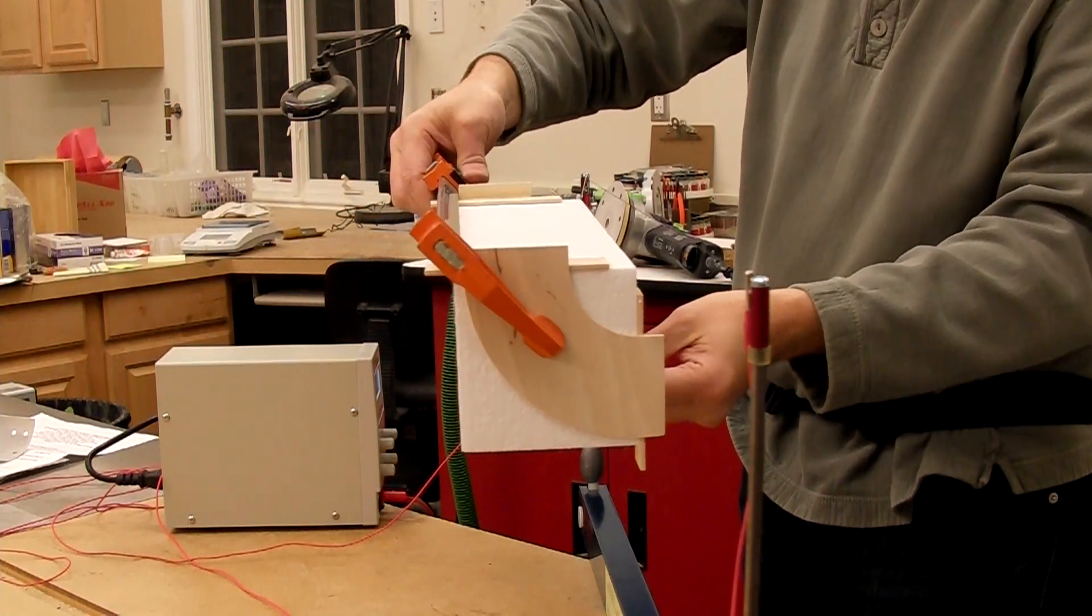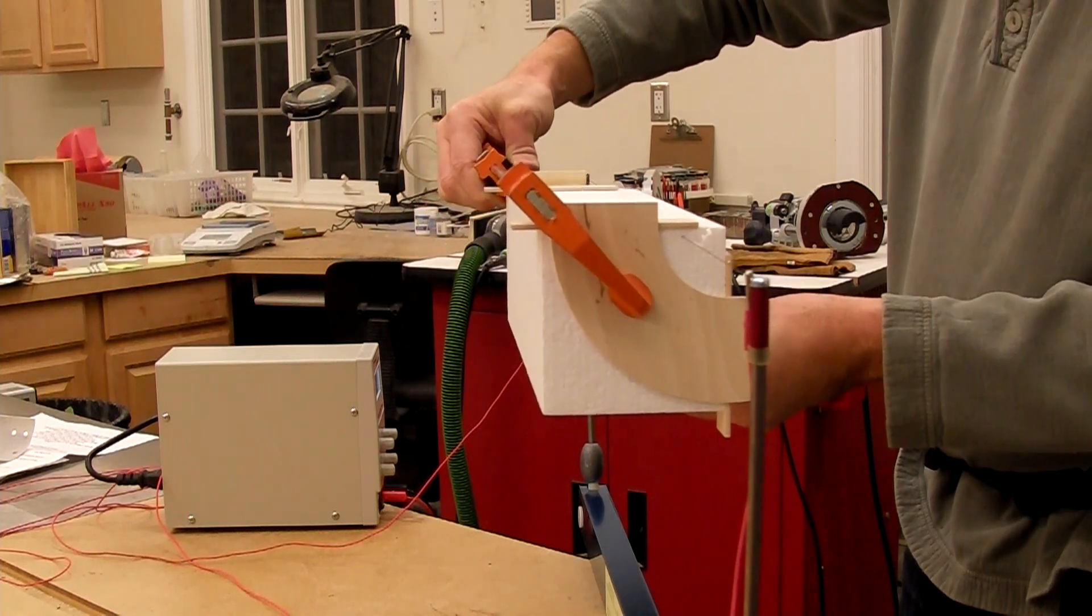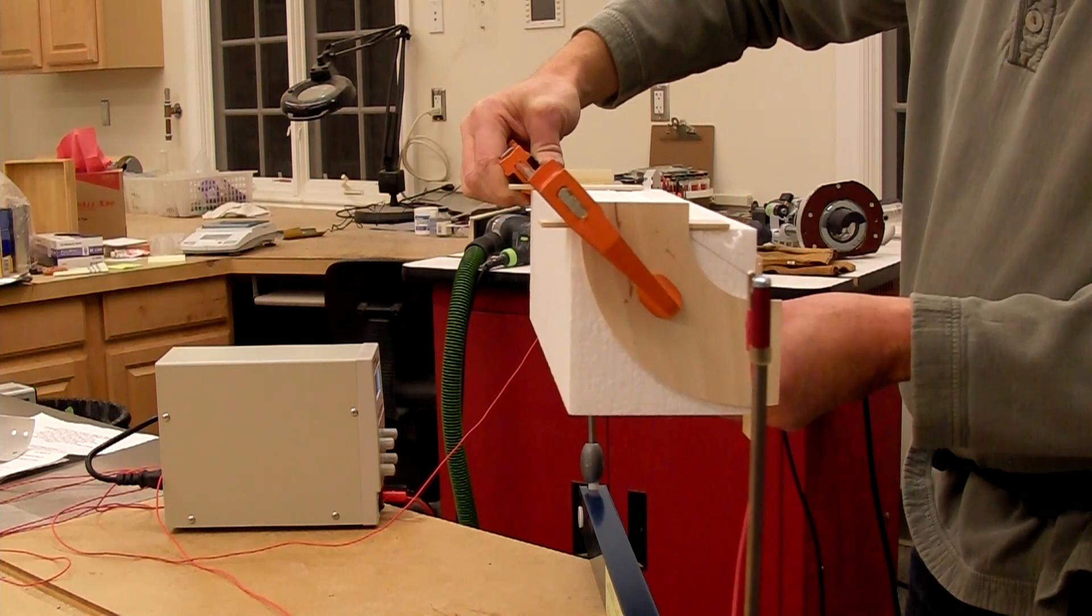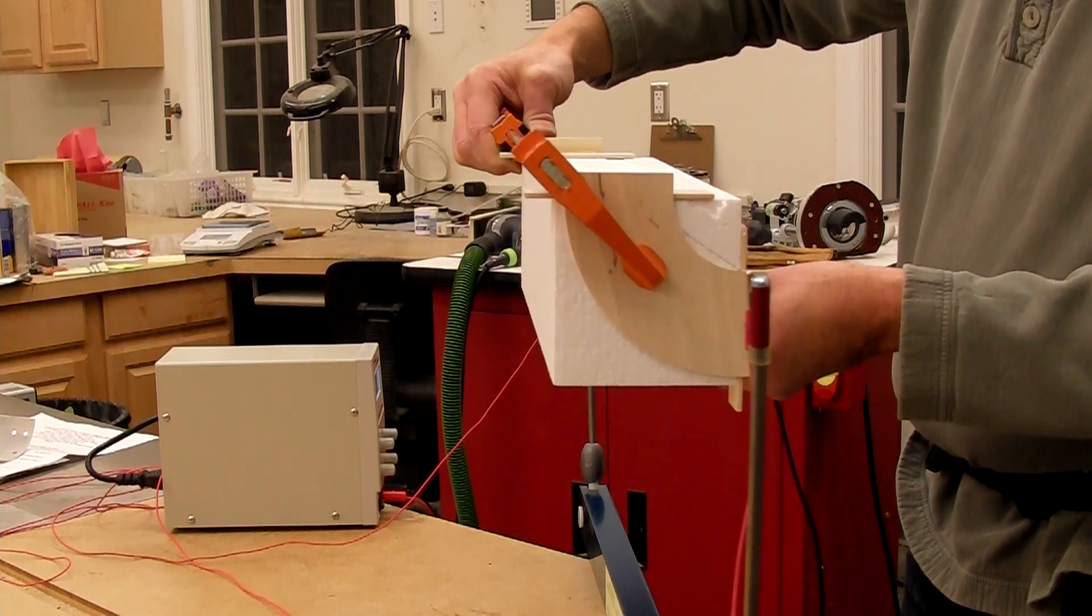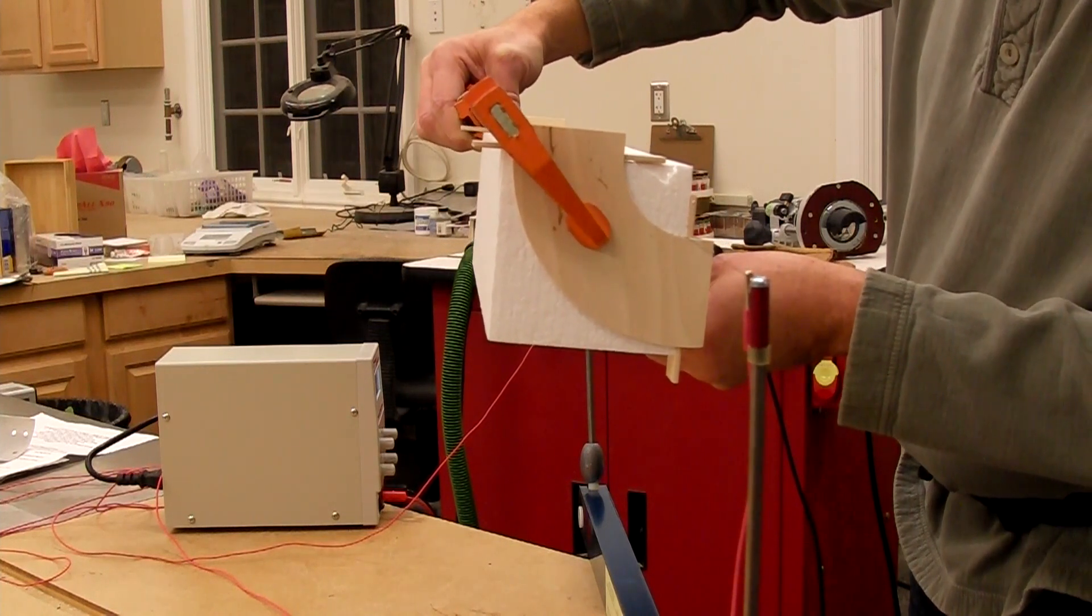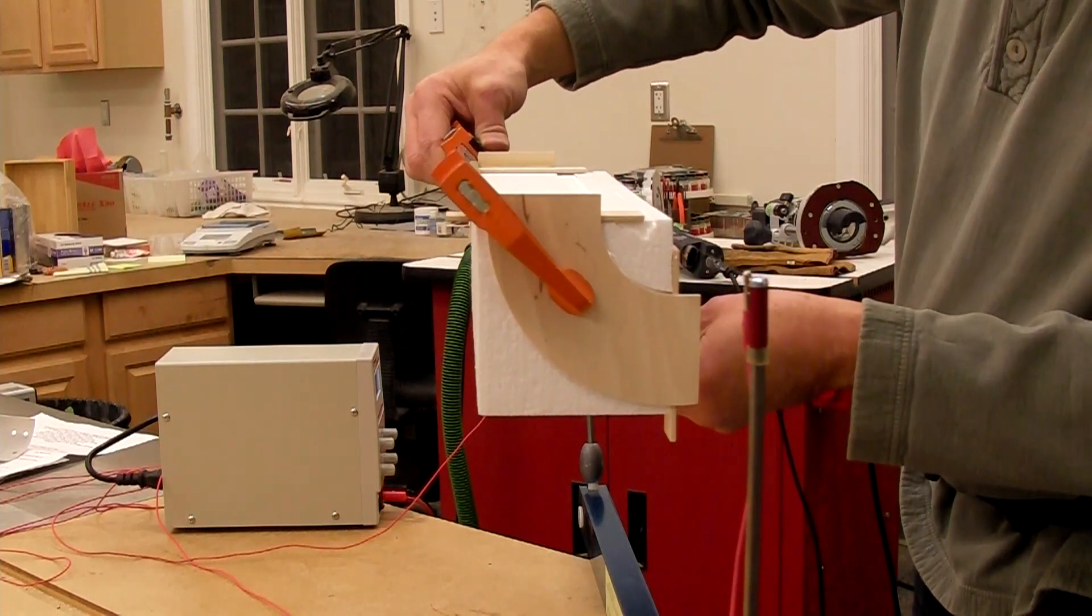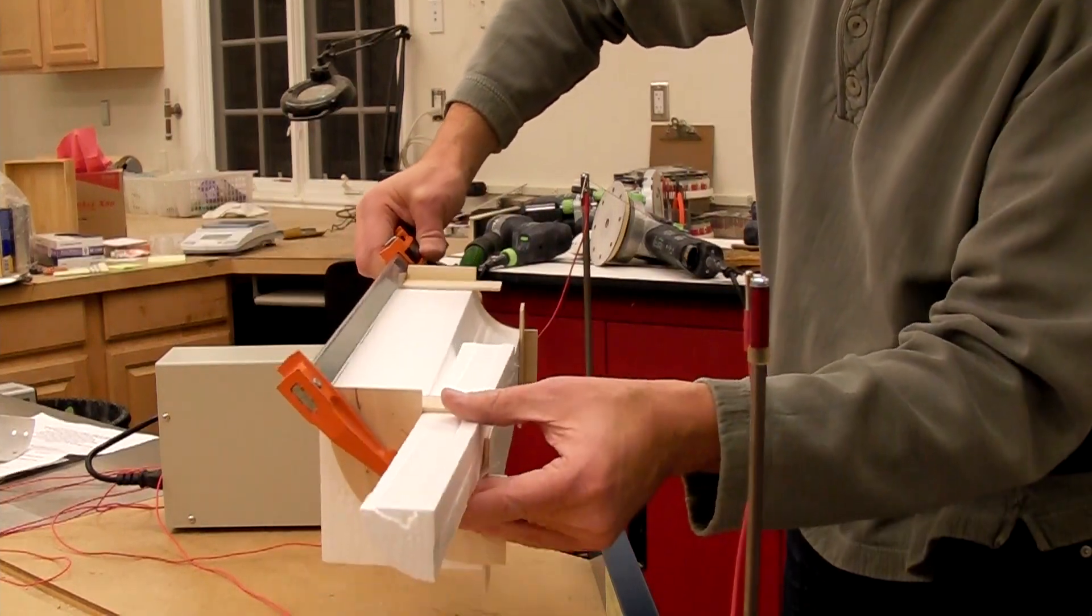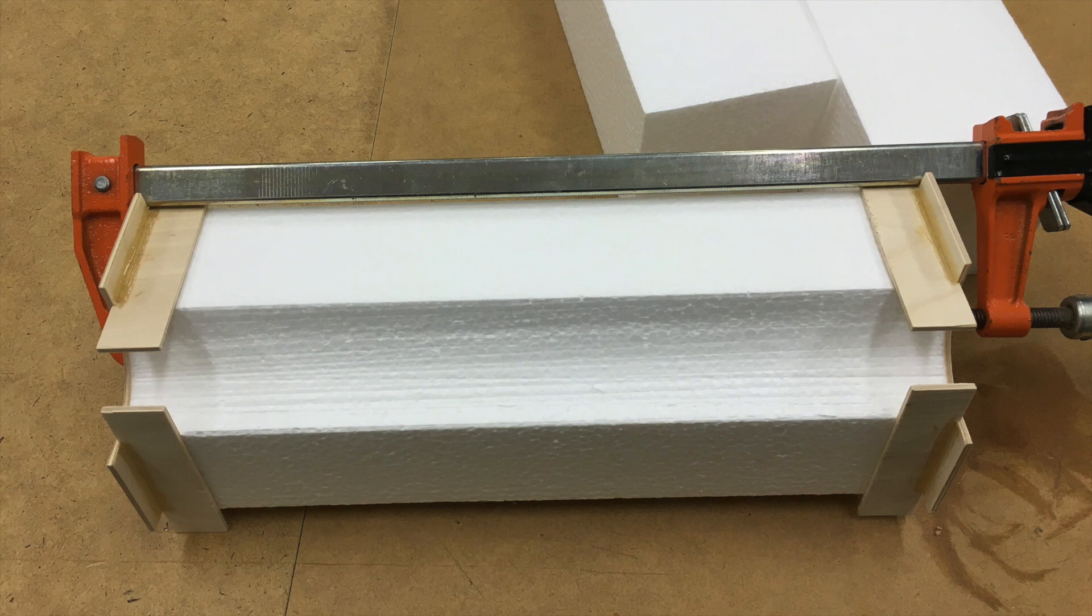The guides are held onto the block with a bar clamp to keep everything securely together. And then we go back over to the hot wire and run it through, creating the inside curve by running it along both guides. Once the bulk of the material has been removed, you can take a second pass to clean up any irregularities if necessary. And here's the scoop taken out to make room for the inside tube.